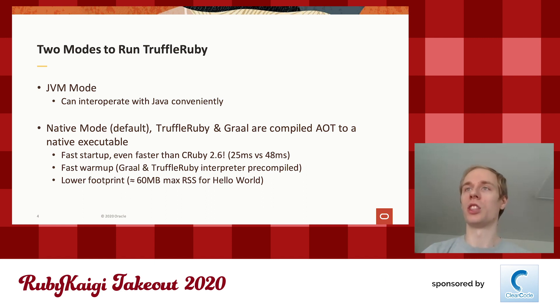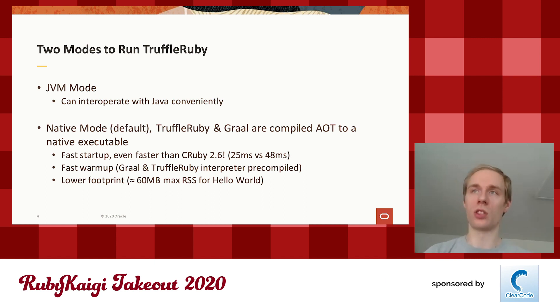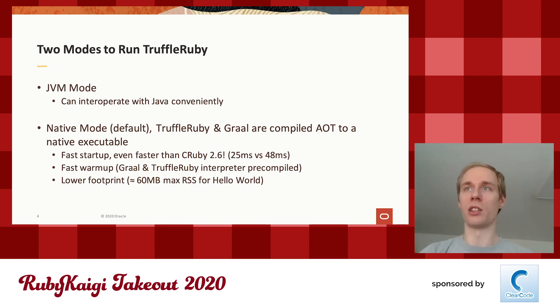The reason native mode is faster is basically that you have a VM specialized for TruffleRuby with nothing else. It doesn't need to be as generic as GraalVM. It doesn't need to load classes dynamically. It's just running TruffleRuby, and that's what it's specialized for.